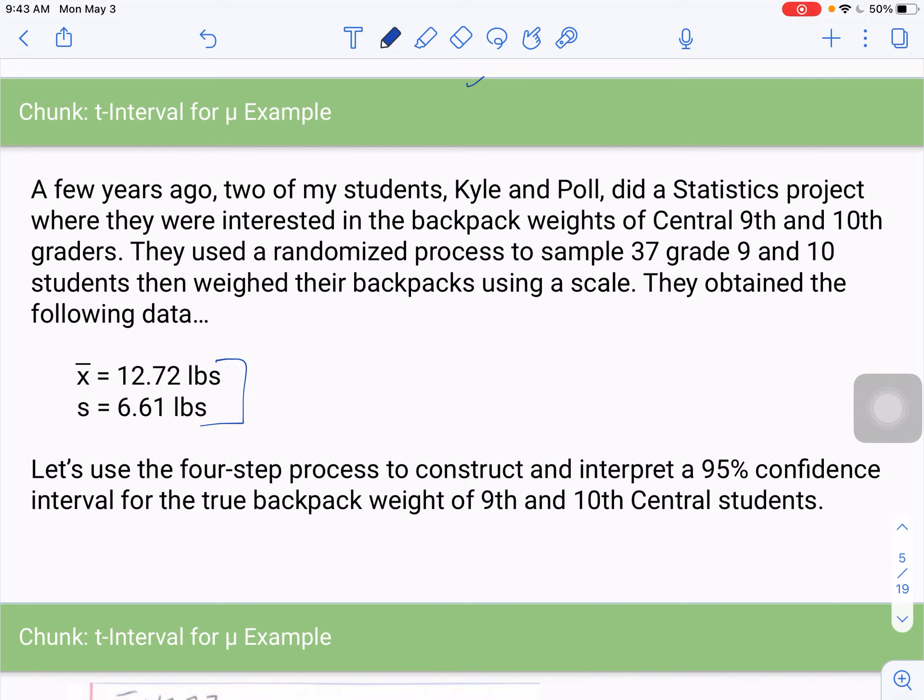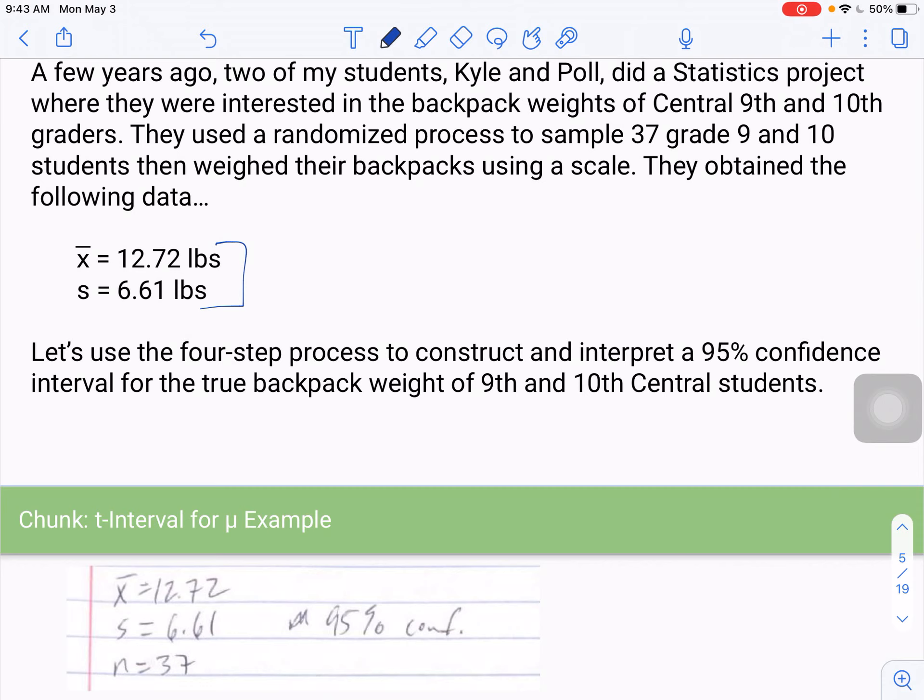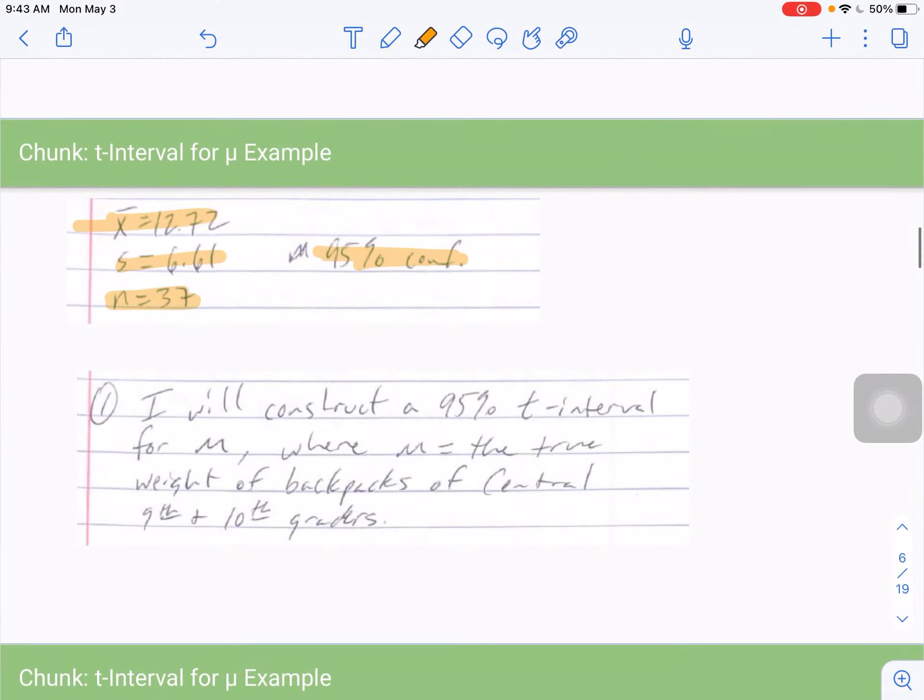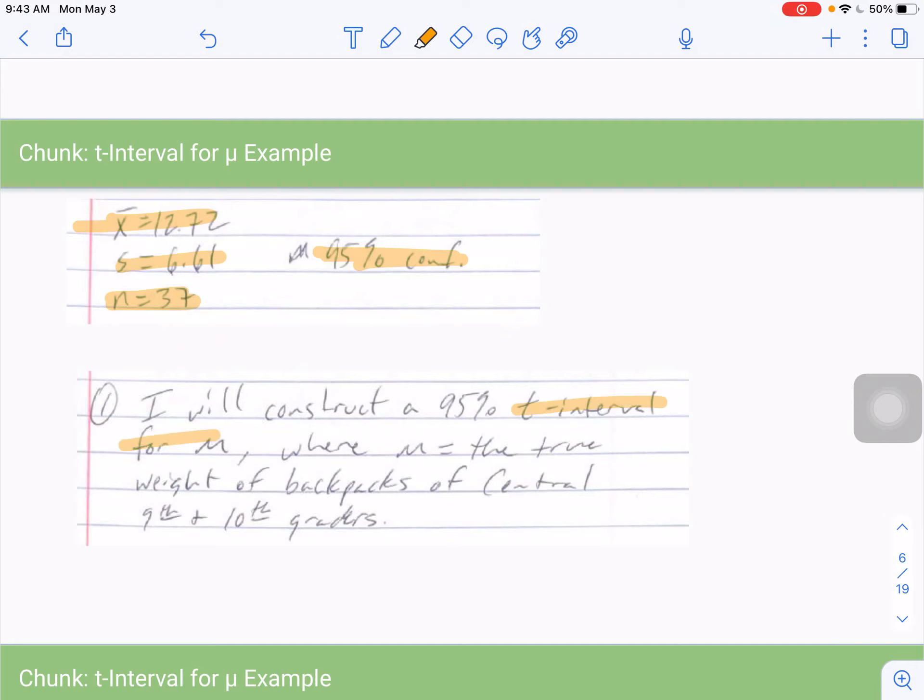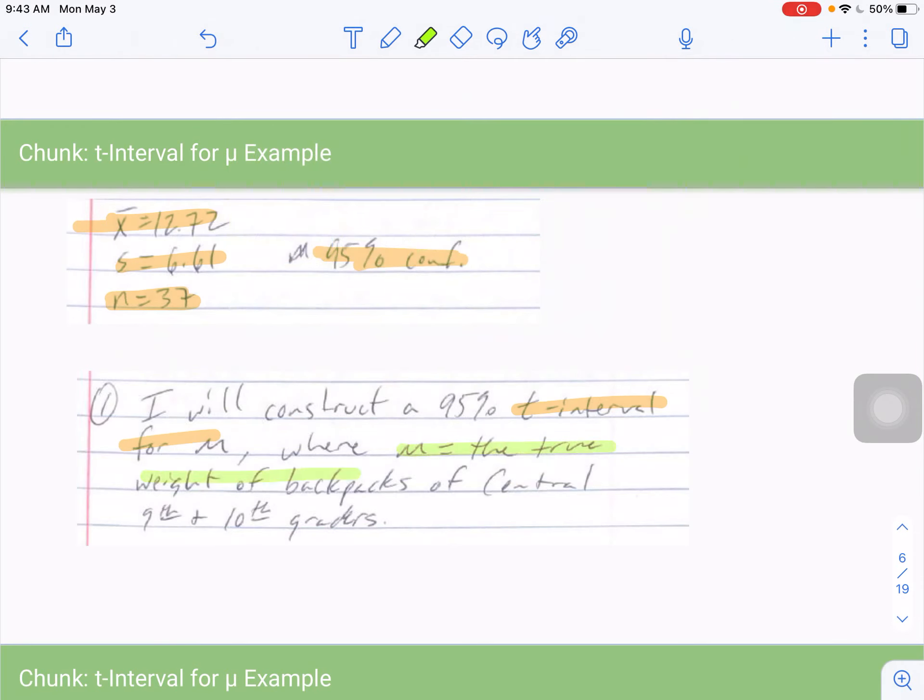If we do the next one, so tail probability of 0.05 and 11 degrees of freedom. So again, 2nd VARS, inverse T, 0.05 and 11 degrees of freedom. And hit enter. And that is going to give me a T value. Sometimes again, we'll do T star, 1.796. So again, that would be the critical value for 90% confidence and a sample size of 12. Okay, so then we kind of just run through the rest of them. 99% confidence, 24 as my sample size, that's going to be much larger, 2.807. Number 4, 1.711. Number 5, 1.782. And number 6, 2.262.